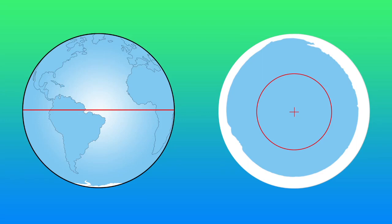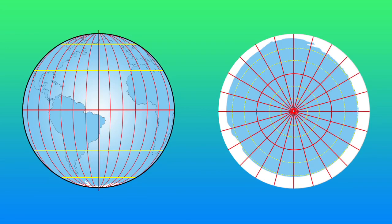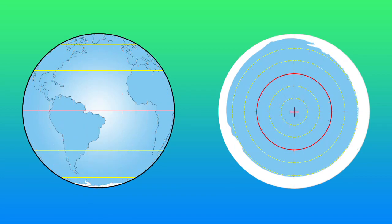Running parallel to the equator are also imaginary lines called latitude lines, running east and west. For simplicity, let's stick with the lines that are 30 degrees and 60 degrees on each side of the equator. On the disc, the same lines form concentric circles around the north pole. Any point on the earth can be shown by a longitude coordinate and a latitude coordinate — the point being where the two lines meet. For our purposes here, all I need are latitude lines, which show how far you are from the north pole.